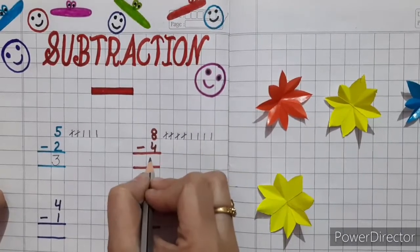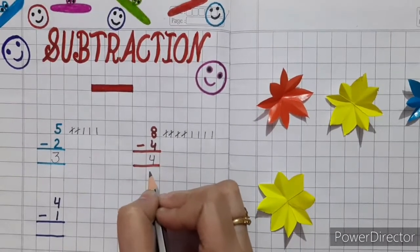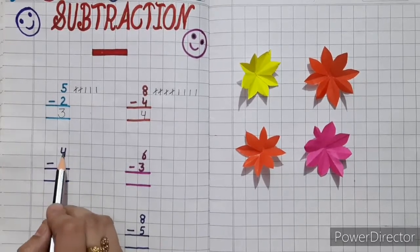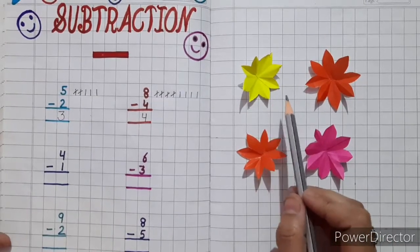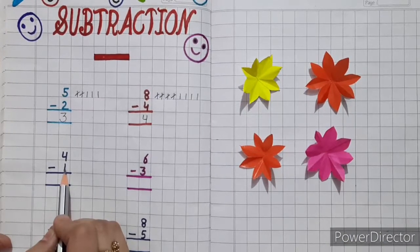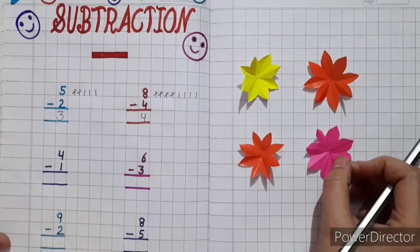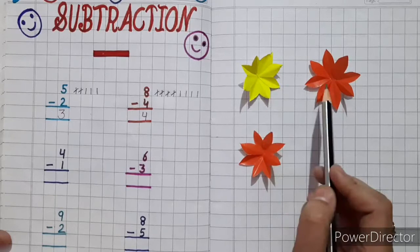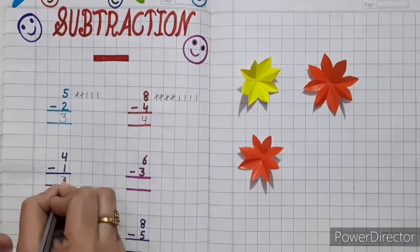So how many lines are left? One, two, three, four — so four is the answer. Next method is the object method. This is four minus one. See here we have four flowers: one, two, three, four. This is minus one, so take away one flower. Now kids, tell me how many flowers are left? One, two, three — so three is the right answer. Write three here.